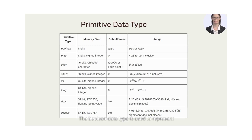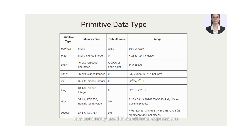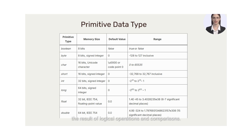The boolean data type is used to represent two values: true or false. It is commonly used in conditional expressions and control structures to make decisions in a program. Boolean variables are typically used to store the result of logical operations and comparisons.